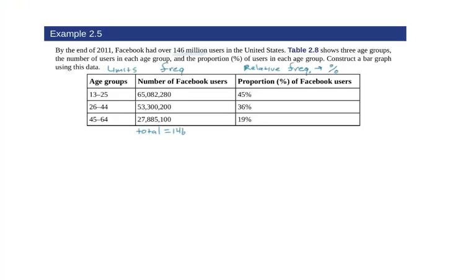Okay, let's look at some other types of graphs here. So here we have some data. We're looking at different age groups and number of Facebook users. They're giving us a proportion, which is what we've talked about as a relative frequency. And then the actual number of users, which is the frequency. Then we have our limits, the age groups.